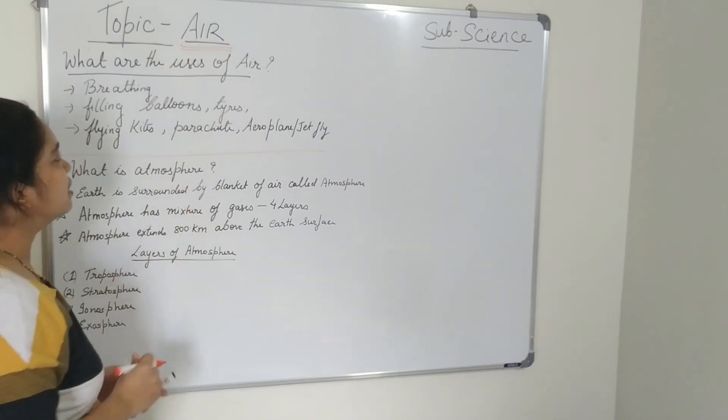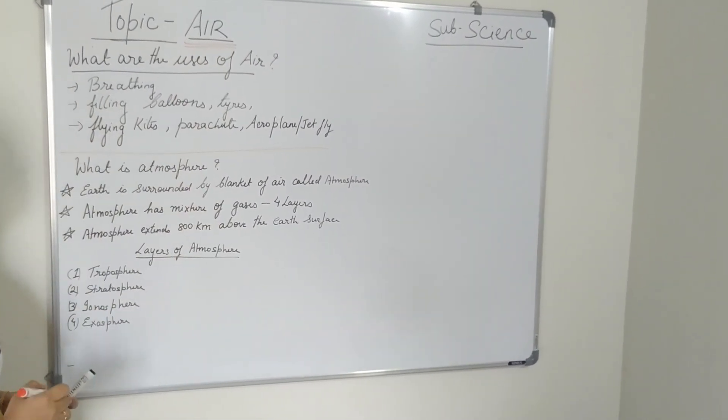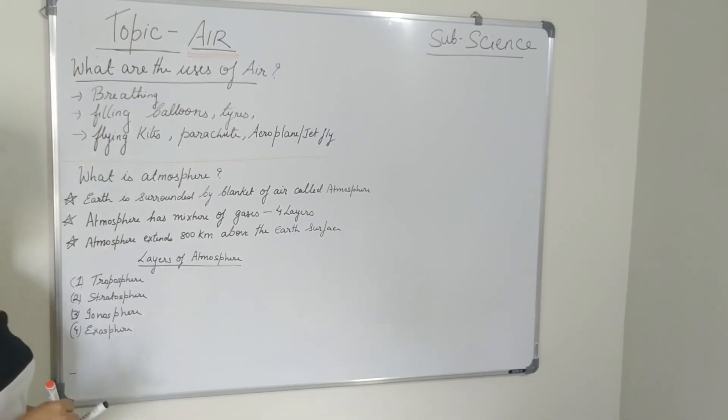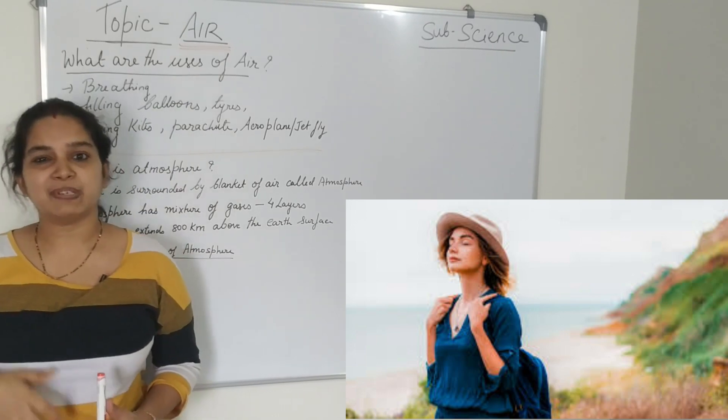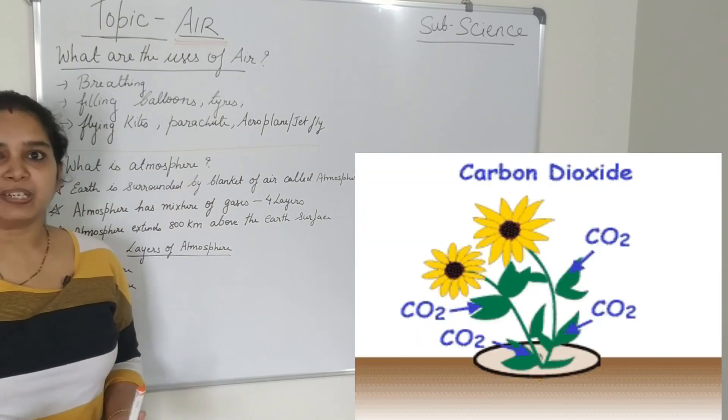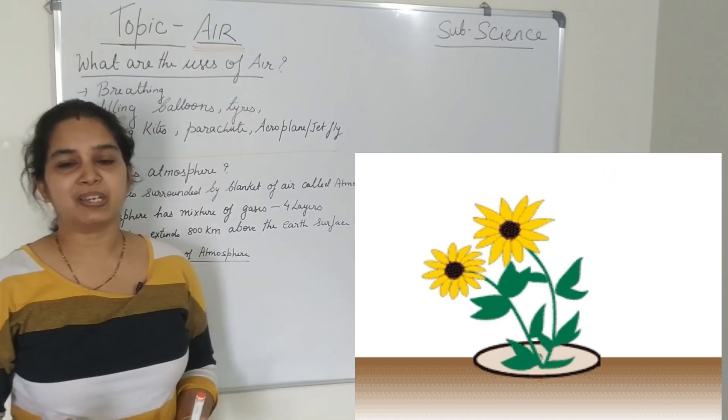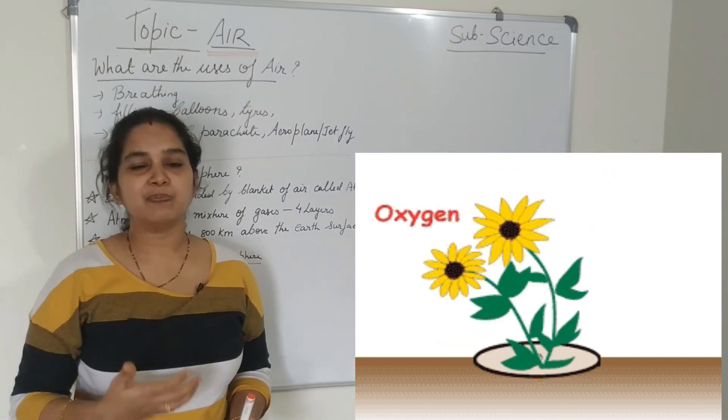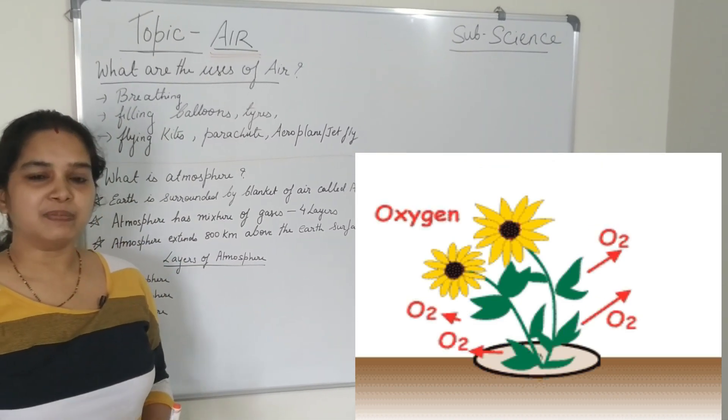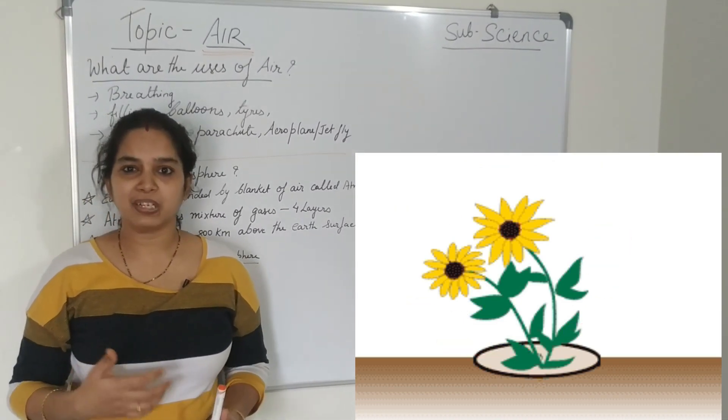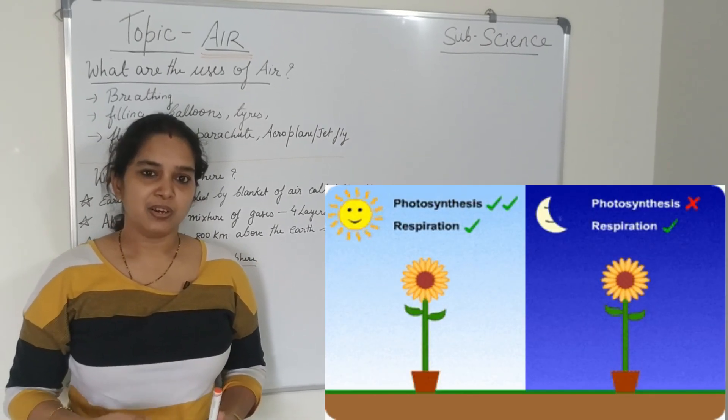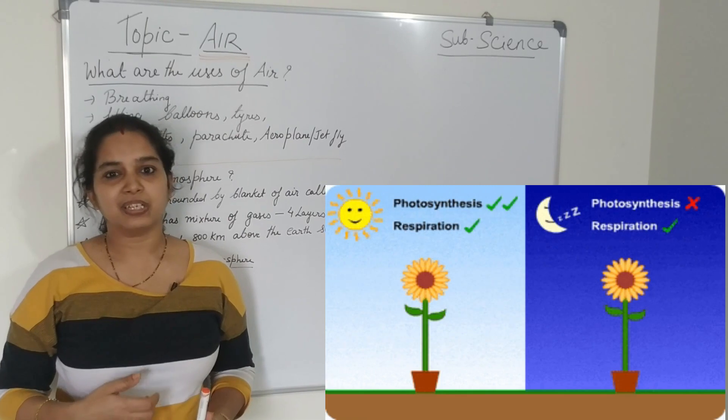First we will learn about what are the uses of air. How the air is used. Yes, air is used for breathing. Air is basically used for survival. Plants use carbon dioxide present in the air for making food, that is through the process called photosynthesis. But we and the animals take in oxygen from the air for our breathing. Plants also take in oxygen for respiration during the night time.